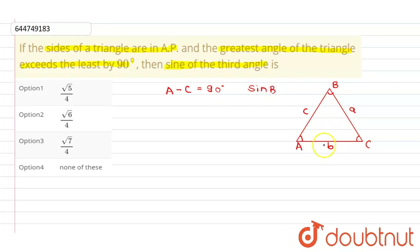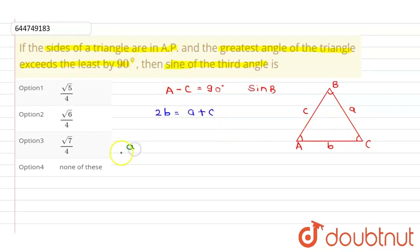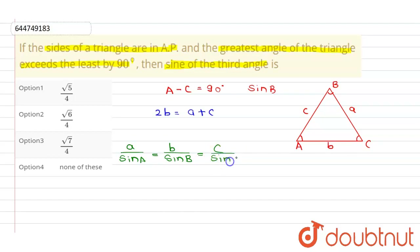It is given that the sides of the triangle are in AP, so from this we can write 2b equals a plus c. Now using the sine rule in triangle ABC: a divided by sine A equals b divided by sine B equals c divided by sine C, and this equals k.